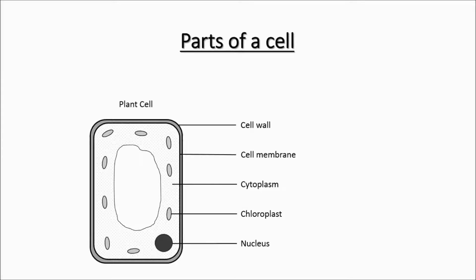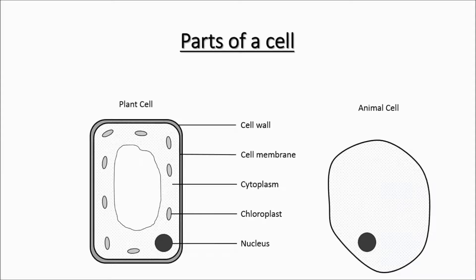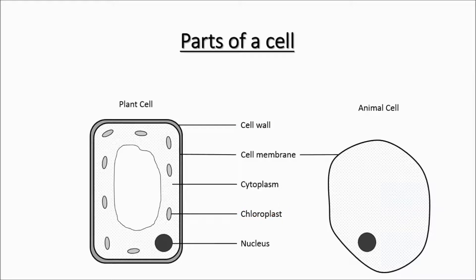Now, let's move on to label the animal cell. In the animal cell, there are no cell wall and chloroplasts. Only the cell membrane, cytoplasm and nucleus are present.